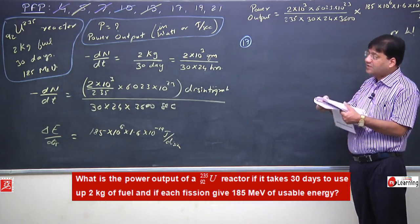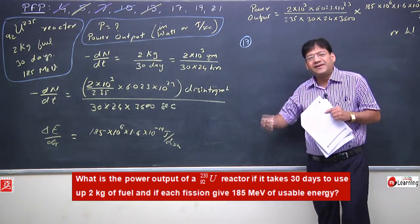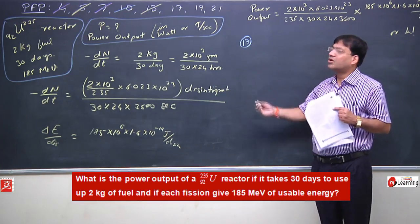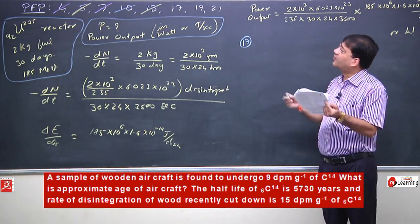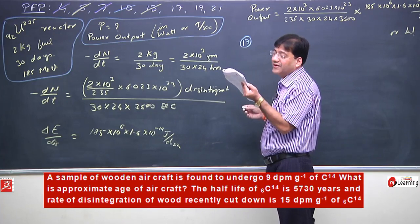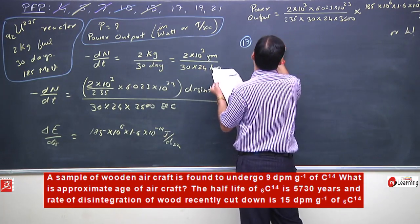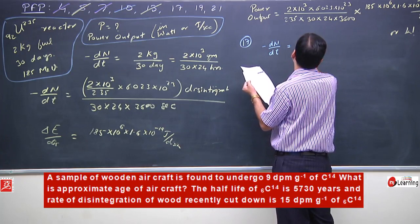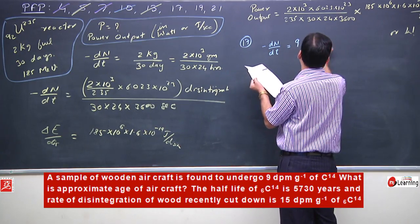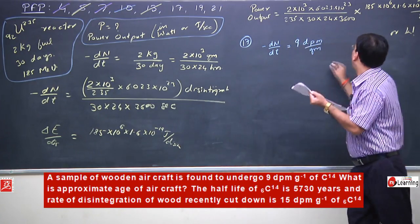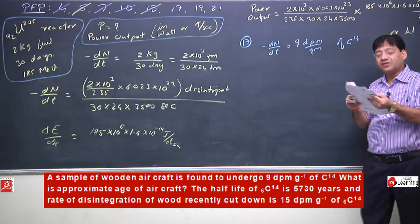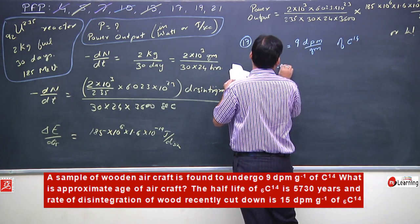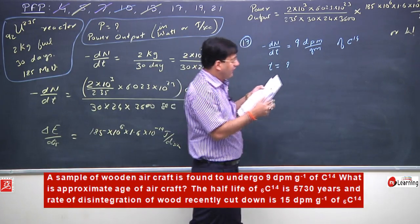Now I will solve the 10th problem. I am explaining this so that you understand how data is given in a problem, how it is read, how its meaning is extracted, and how small operations lead to the final answer. A sample of a wooden aircraft is found to undergo 9 disintegrations per minute per gram of C-14. The approximate age of the aircraft is asked. The half-life of C-14 is 5730 years.